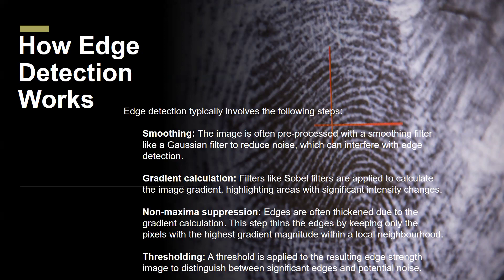However, the calculated edges might be thicker than the actual boundaries. Therefore, non-maxima suppression is used to thin the edges, keeping only the pixels with the strongest intensity changes. Finally, thresholding is applied to distinguish between significant edges and potential noise, resulting in a binary image representing the detected edges.